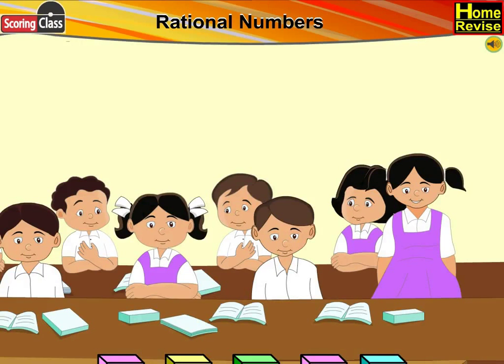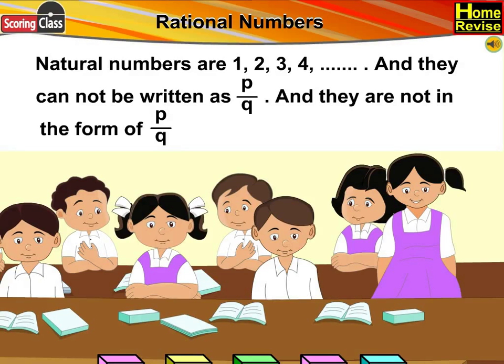No, ma'am. Natural numbers are 1, 2, 3, 4, and so on. And they cannot be written as P upon Q. And they are not in the form of P upon Q.